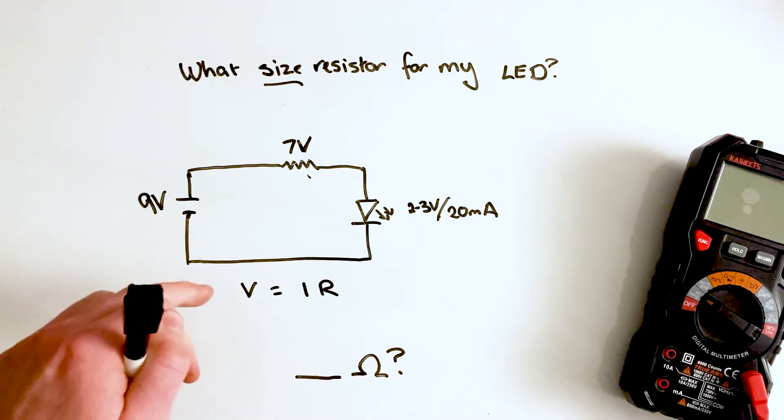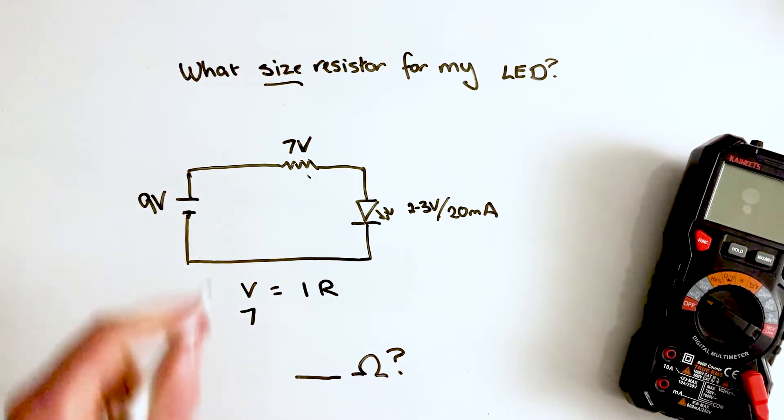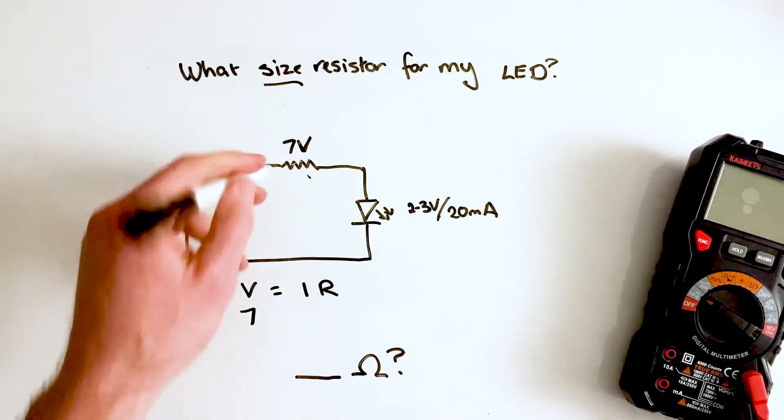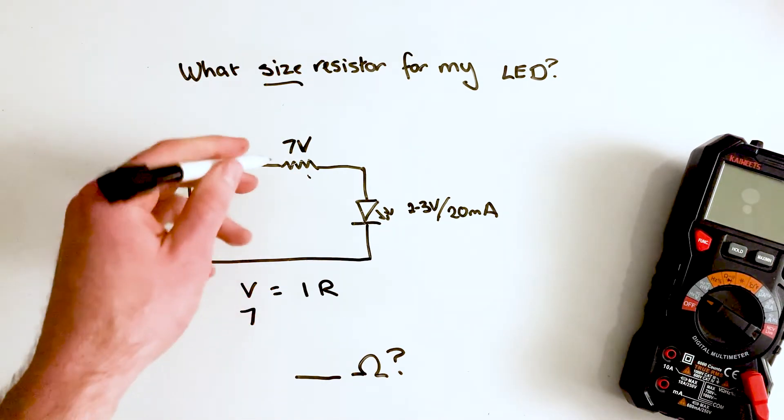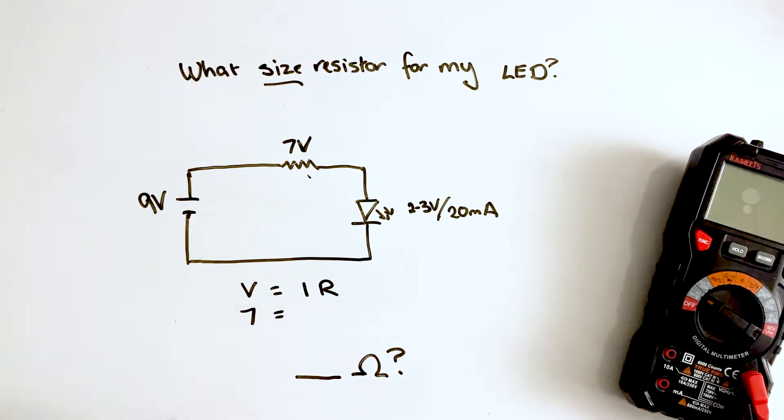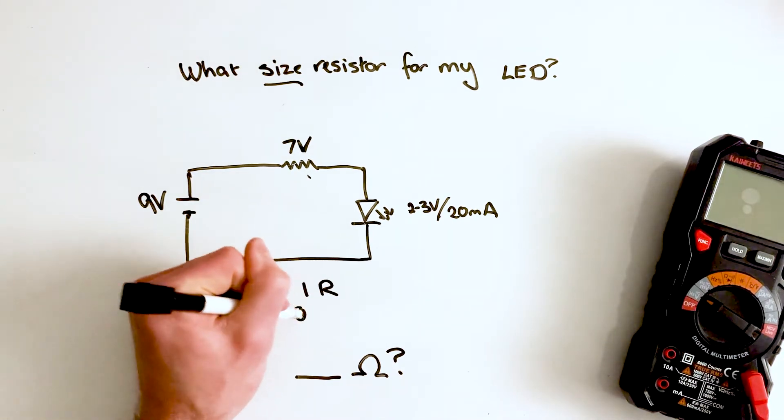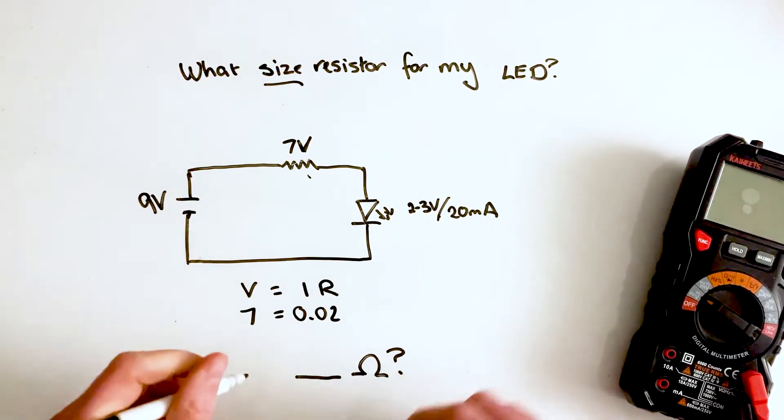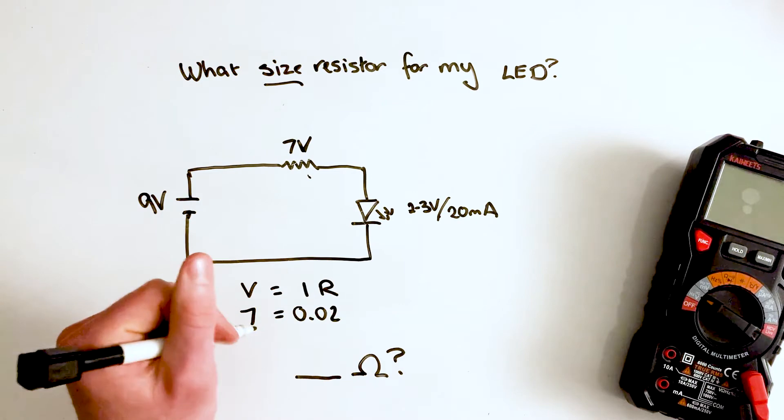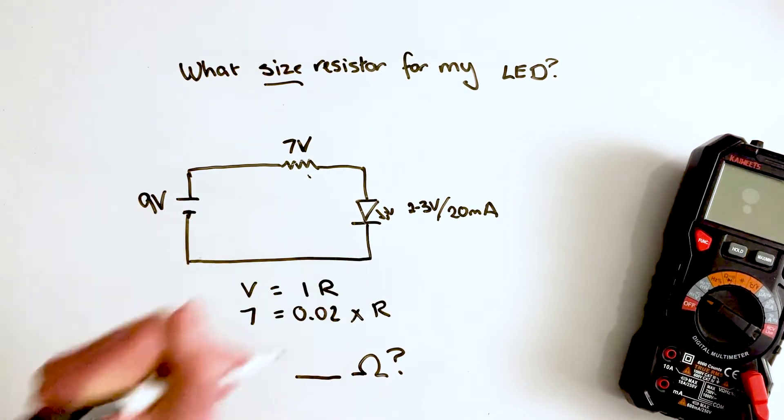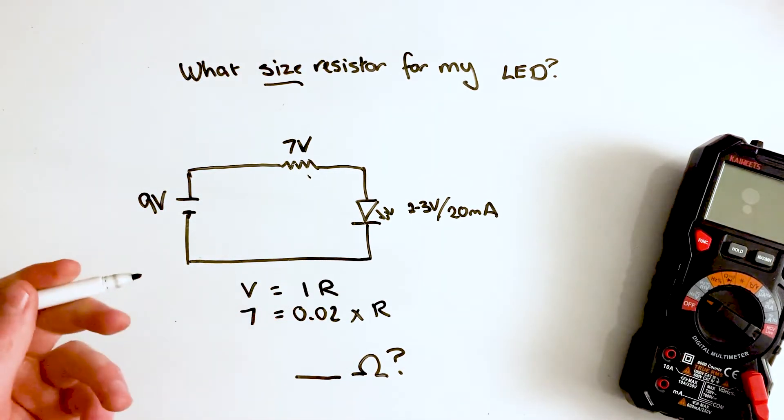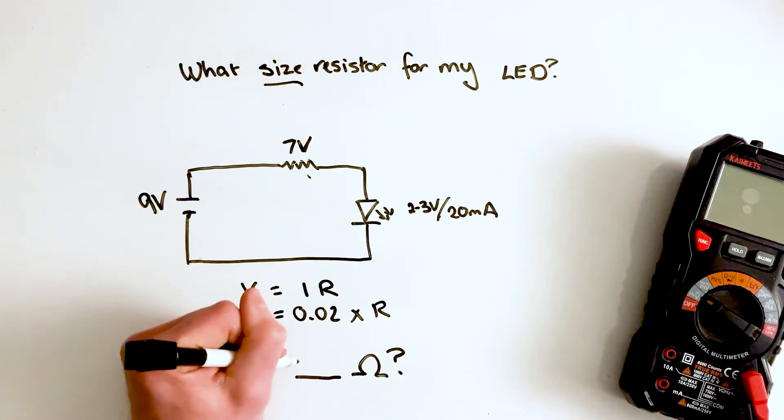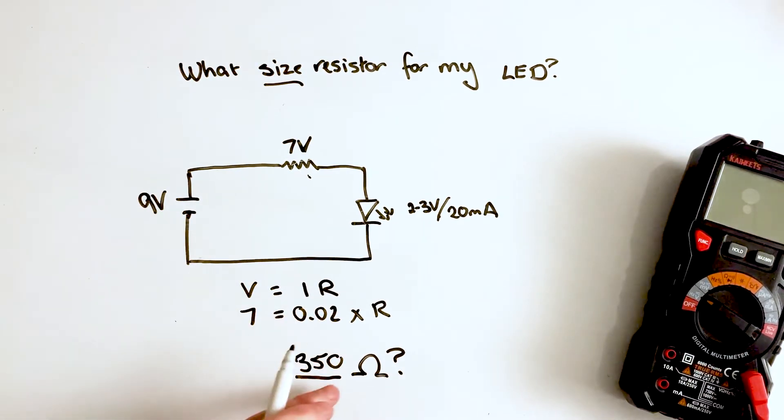The way we can figure that out is to go back to Ohm's law. I start with seven volts, figuring out what size resistor this should be. I'm going to have a voltage drop of about seven volts, a current of about 0.02 amps, multiply that by the resistance. If we do all our math, that's going to come out to 350 ohms.